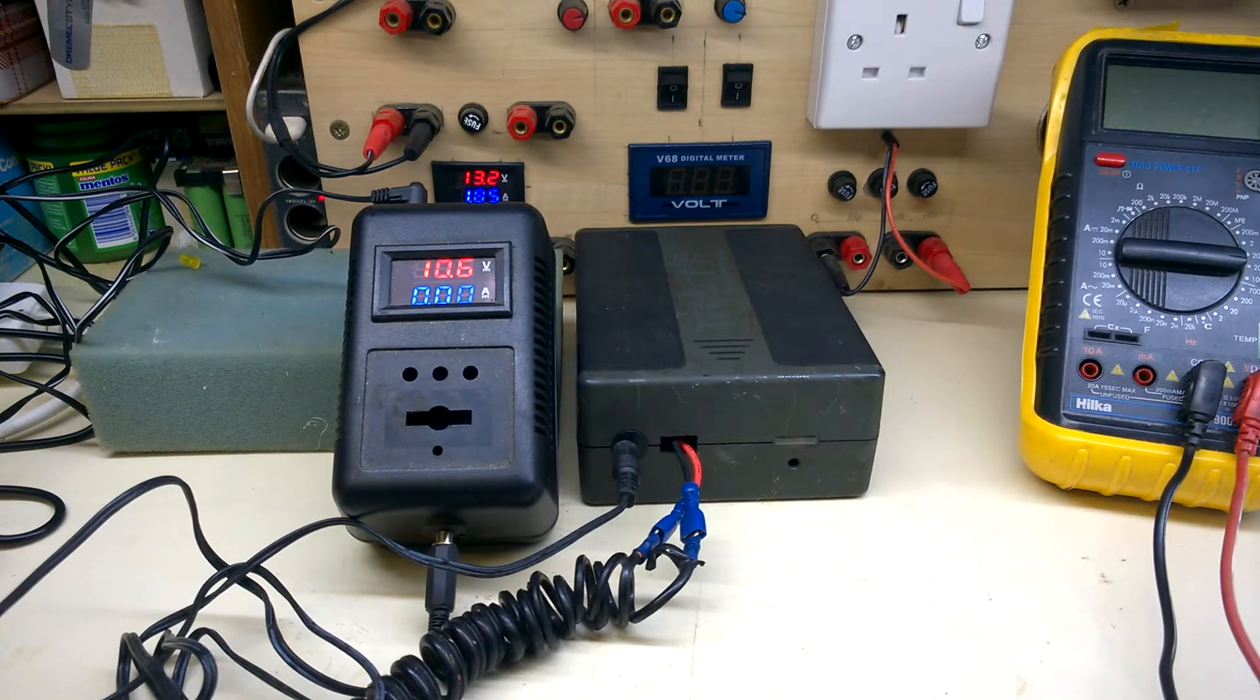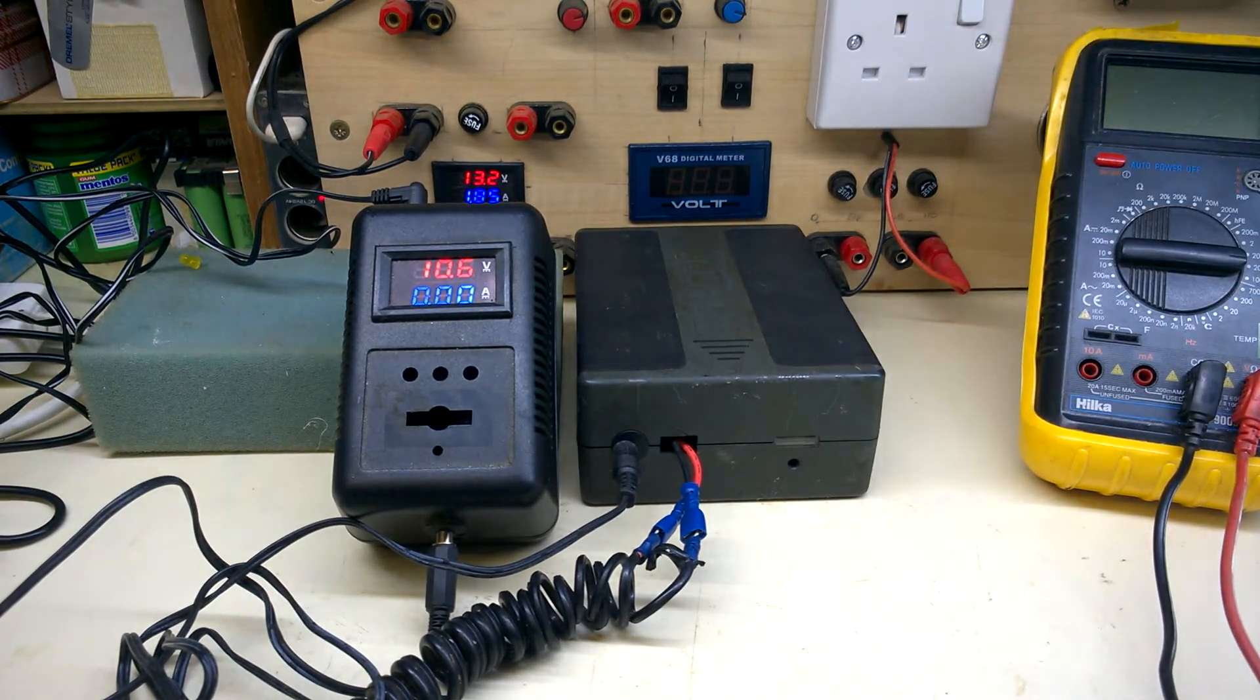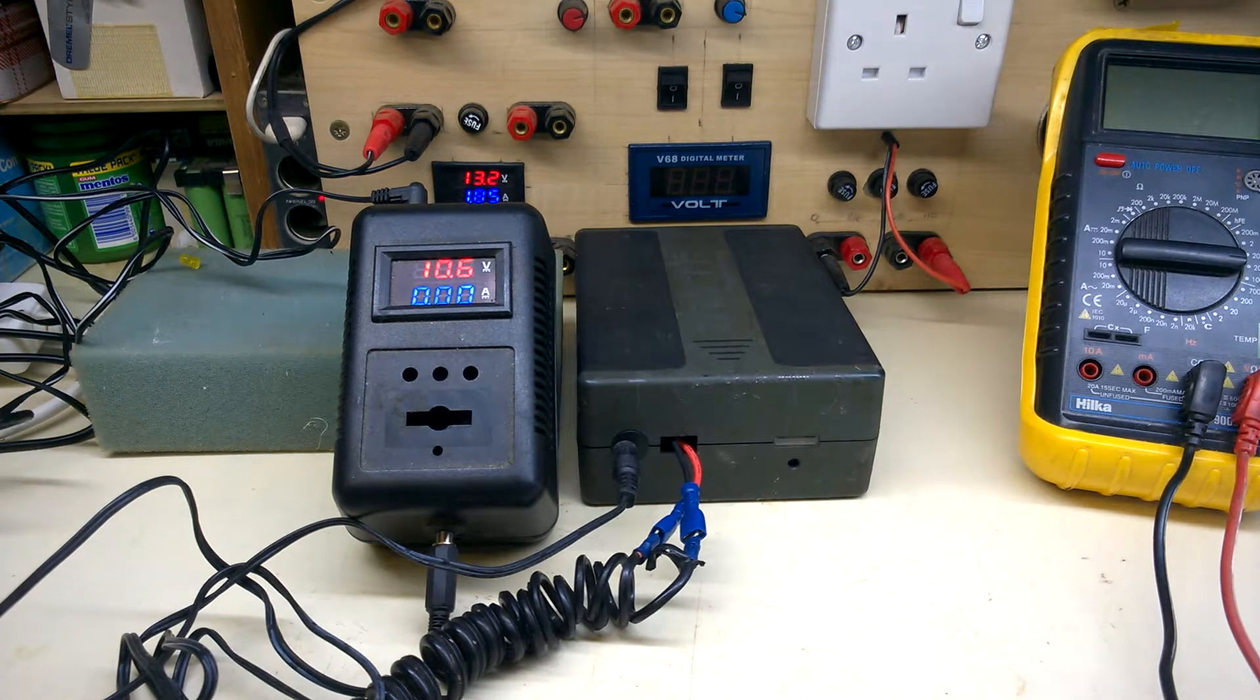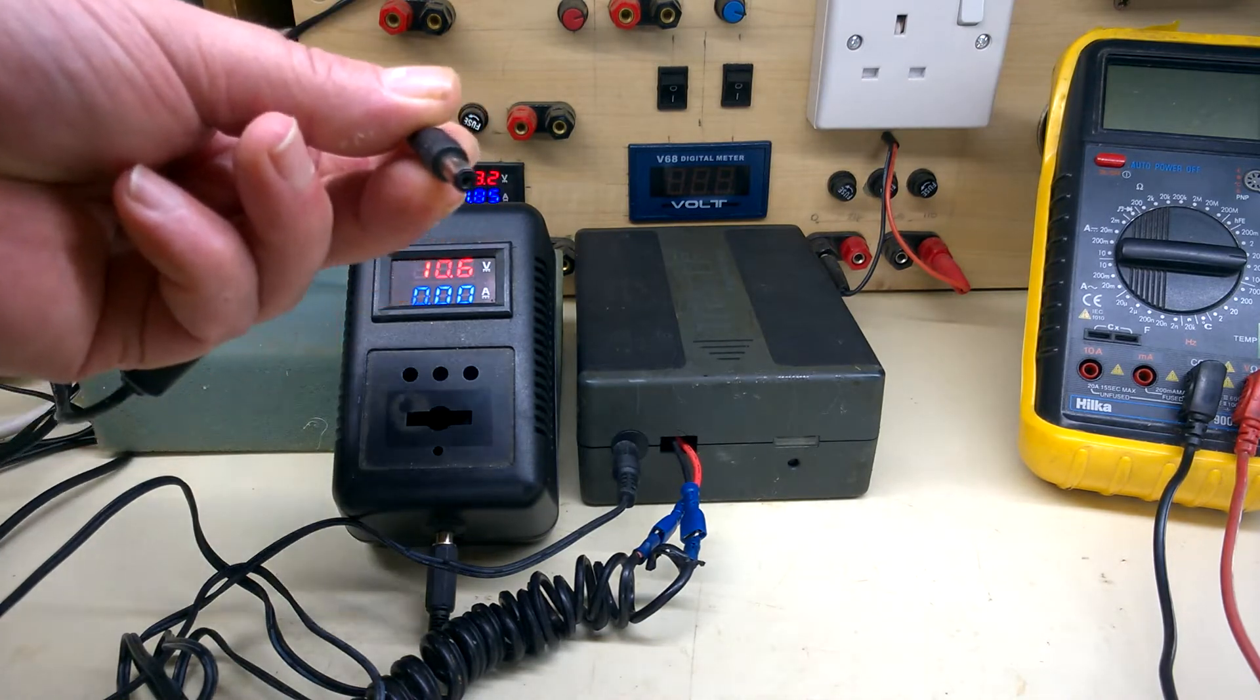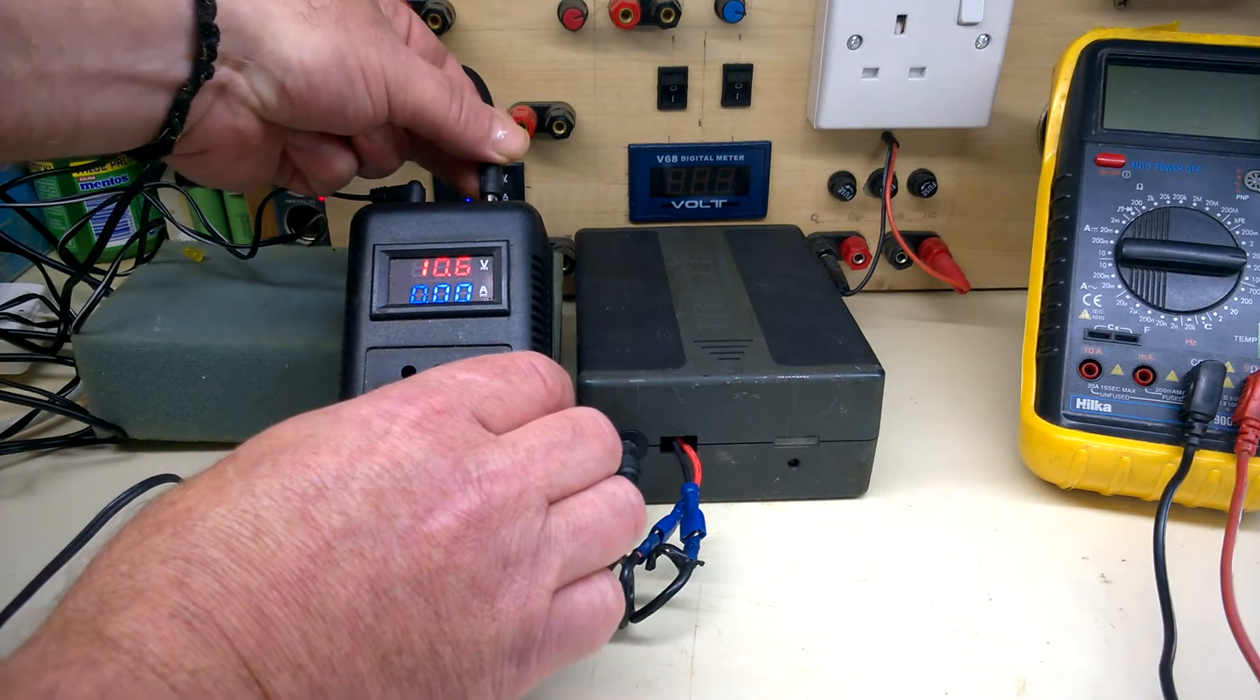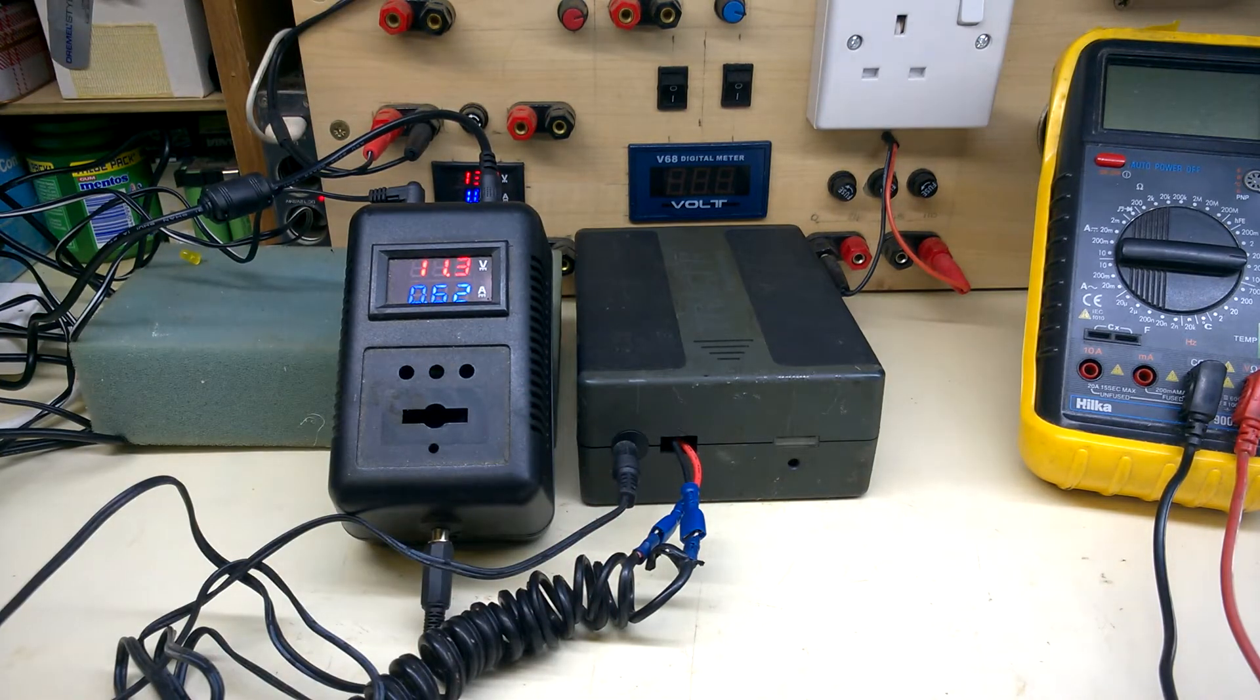I've connected my homemade meter up between the battery pack and the charger. The voltage is a little bit off, but I'm only interested in current. This is a half a volt out. Connect up from the charger that's plugged in, and it's taking some current.